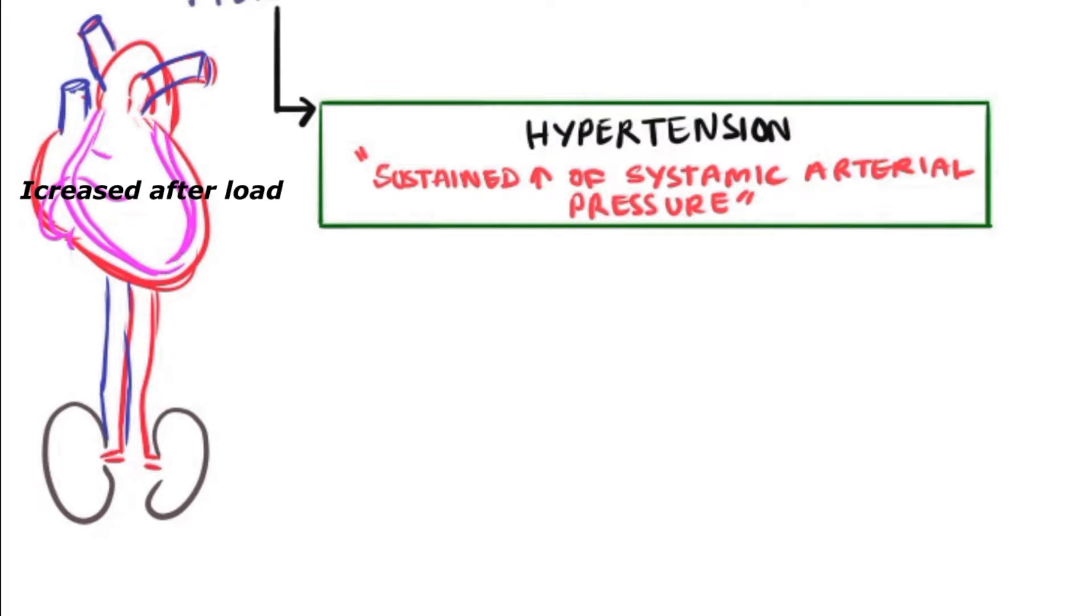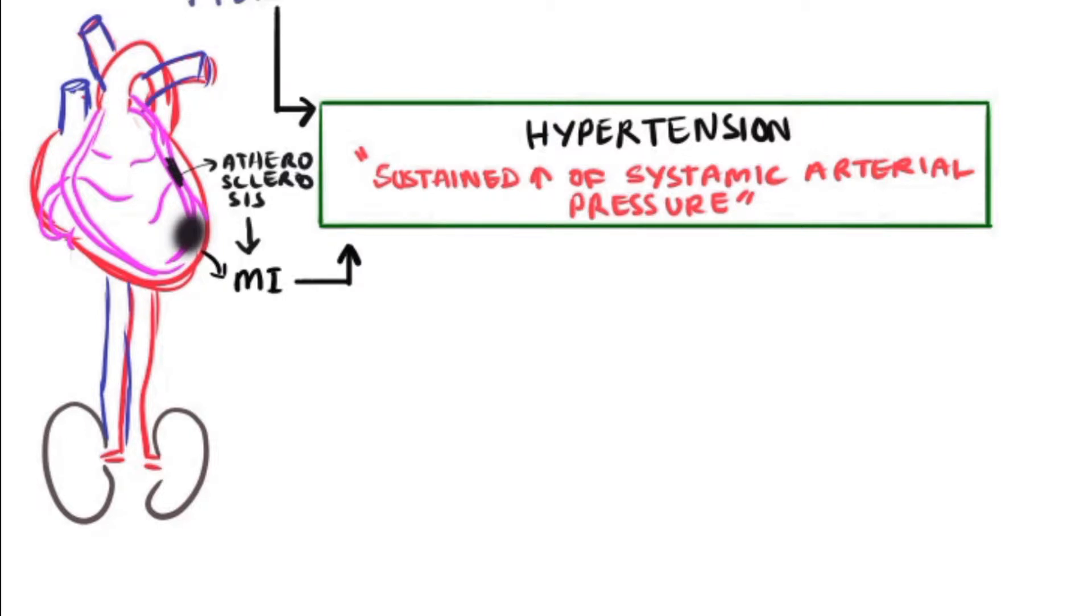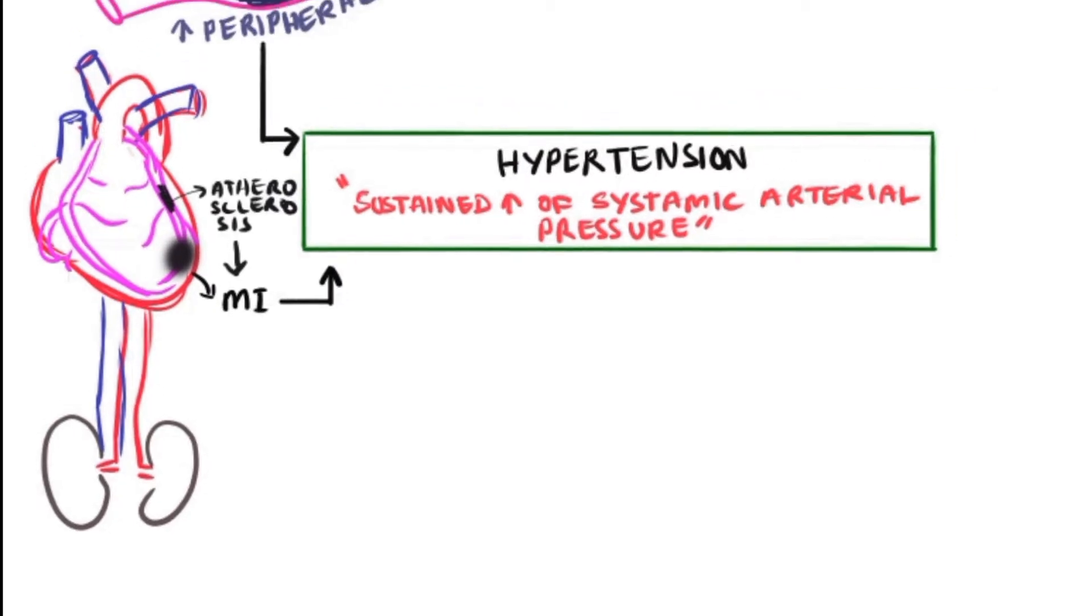increase the afterload on the heart that may lead to cardiomegaly or hypertrophy of the left ventricle. Additionally, the atherosclerosis plaques may be blocking the coronary arteries, leading to myocardial infarction. The MI or damage to muscle fibers may further worsen the hypertension pathophysiology and lead to stroke and other cardiovascular complications.